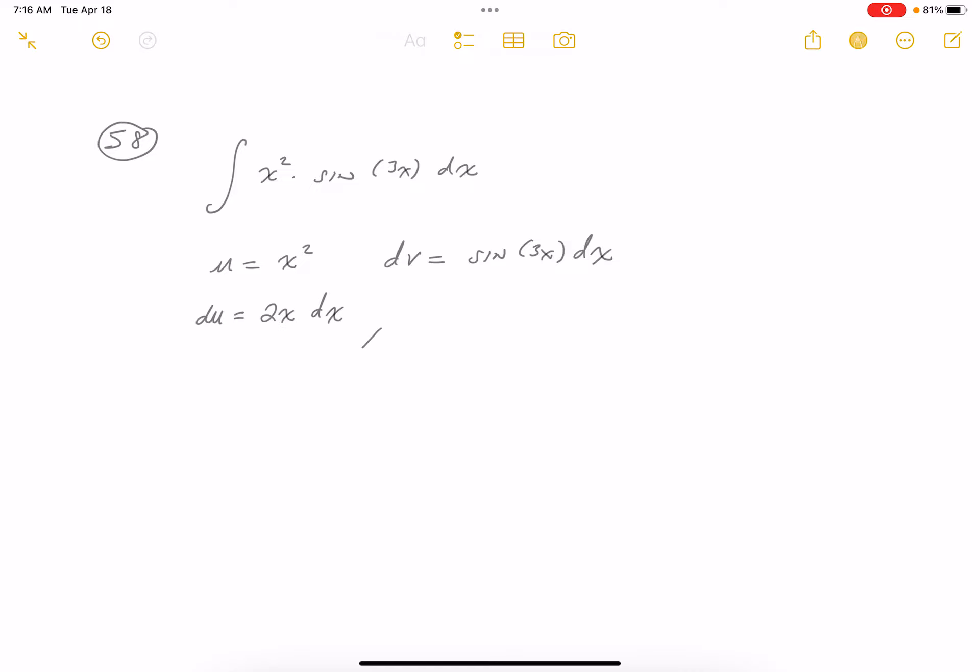Now the dv dx thing is an integration problem. We're not going to worry about the constant of integration to the very end of the problem. So v equals, well, the antiderivative of sine would be minus cosine, this is 3x, and if I differentiate that I got to take care of the 3, so over 3.